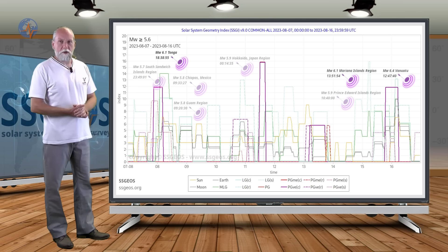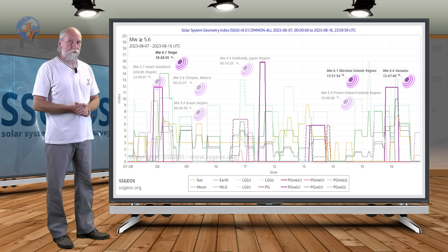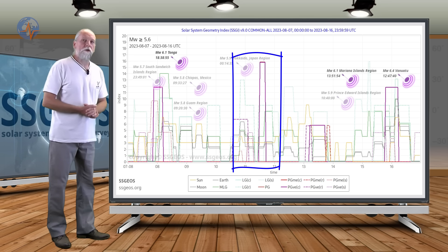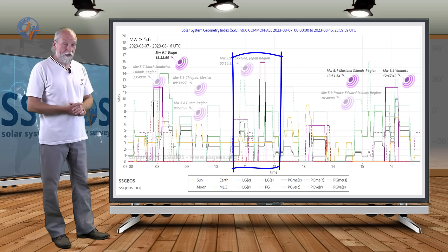We expected some increased seismic activity, potentially even a magnitude 7 earthquake, following the planetary conjunction Mercury-Venus-Neptune on the 11th. That did not happen.